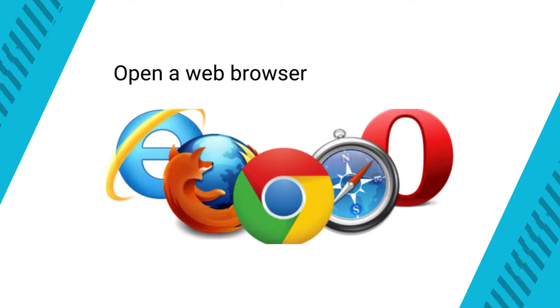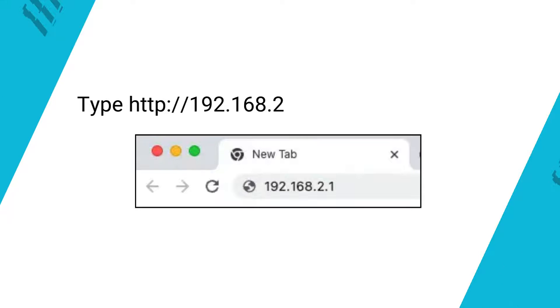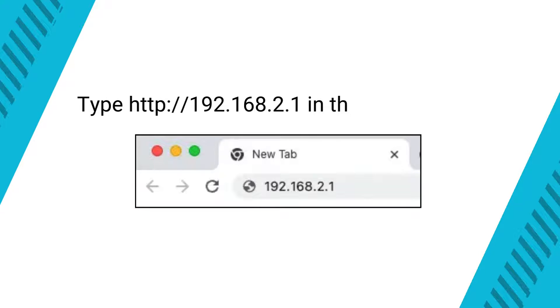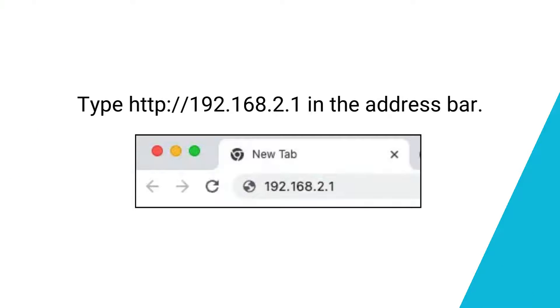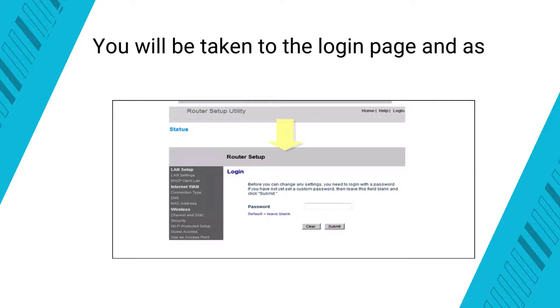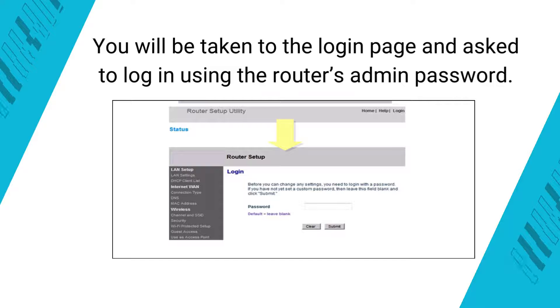Open a web browser of your choice. Type http://192.168.2.1 in the address bar. You will be taken to the login page and asked to log in using the router's admin password.